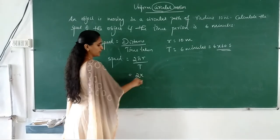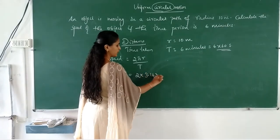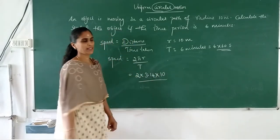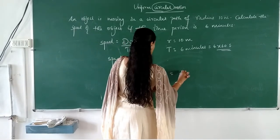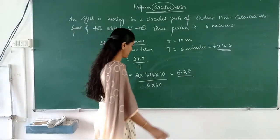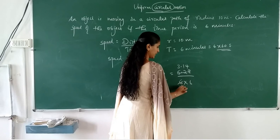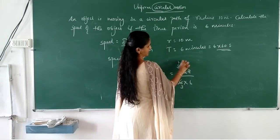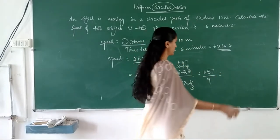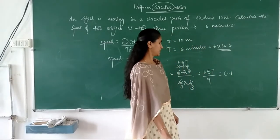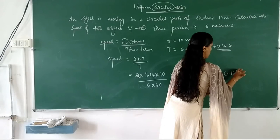Substituting the values: 2 × 3.14 × 10 divided by 6 × 60. This simplifies to 62.8 divided by 360, which gives approximately 0.174 m/s — or working through: 3.14 × 10 = 31.4, divided by 180, giving approximately 0.174 m/s.